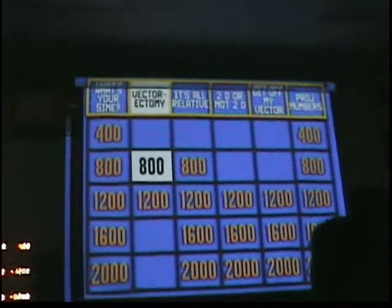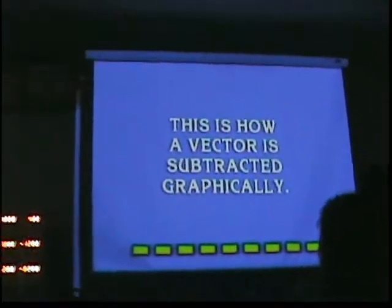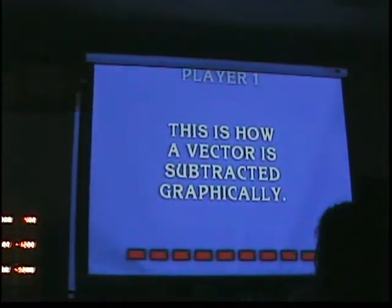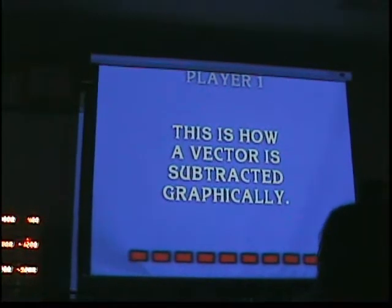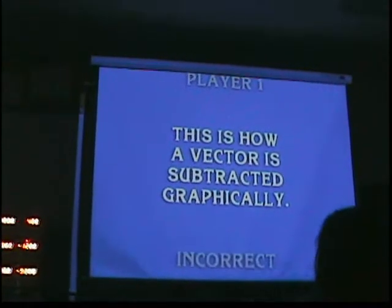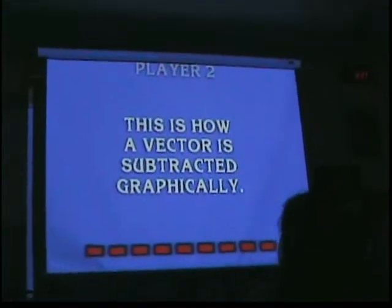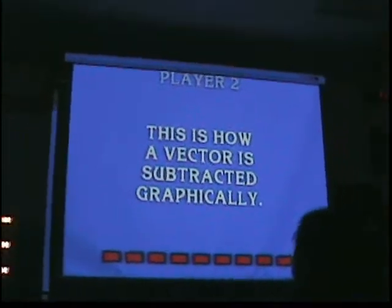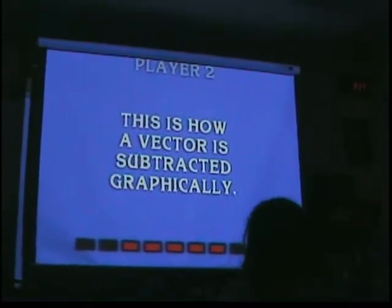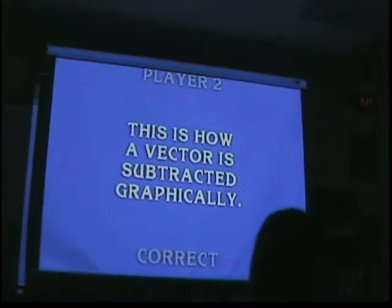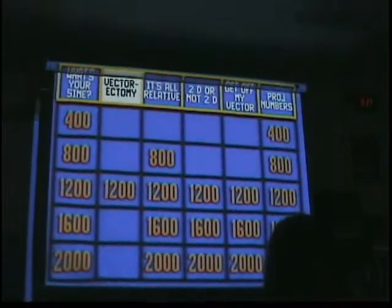Vectorectomy for 800. Player 1. Incorrect! Did you say something? The opposite direction — you turn it around. Very good. But she didn't even say that. She did say that — this and this. And I saw it. Alright, let's go.